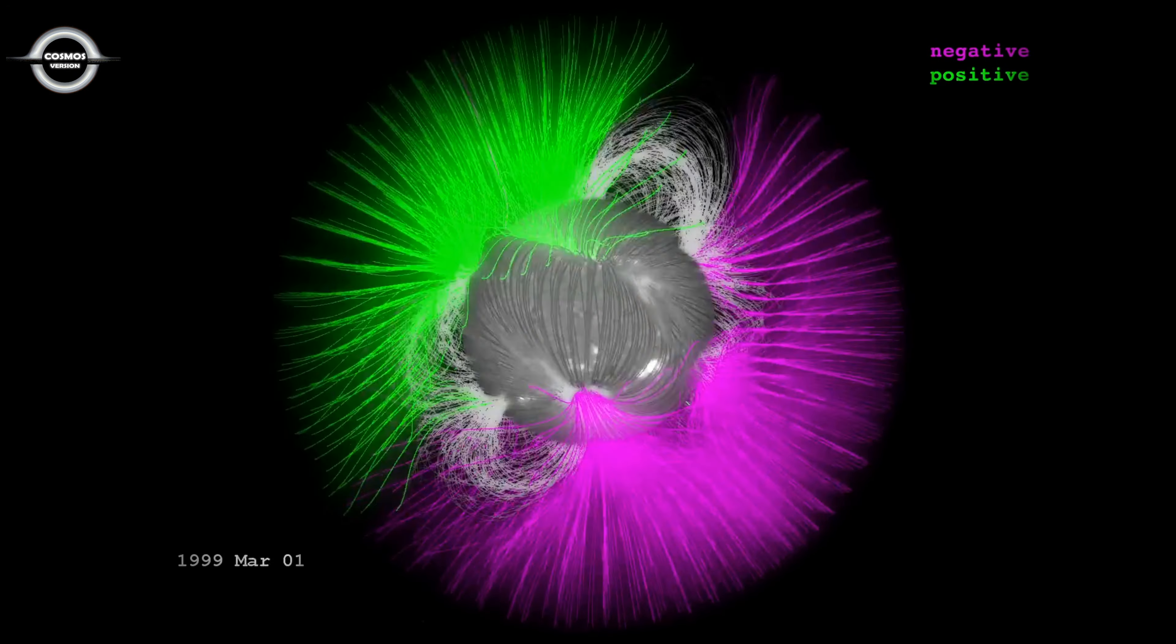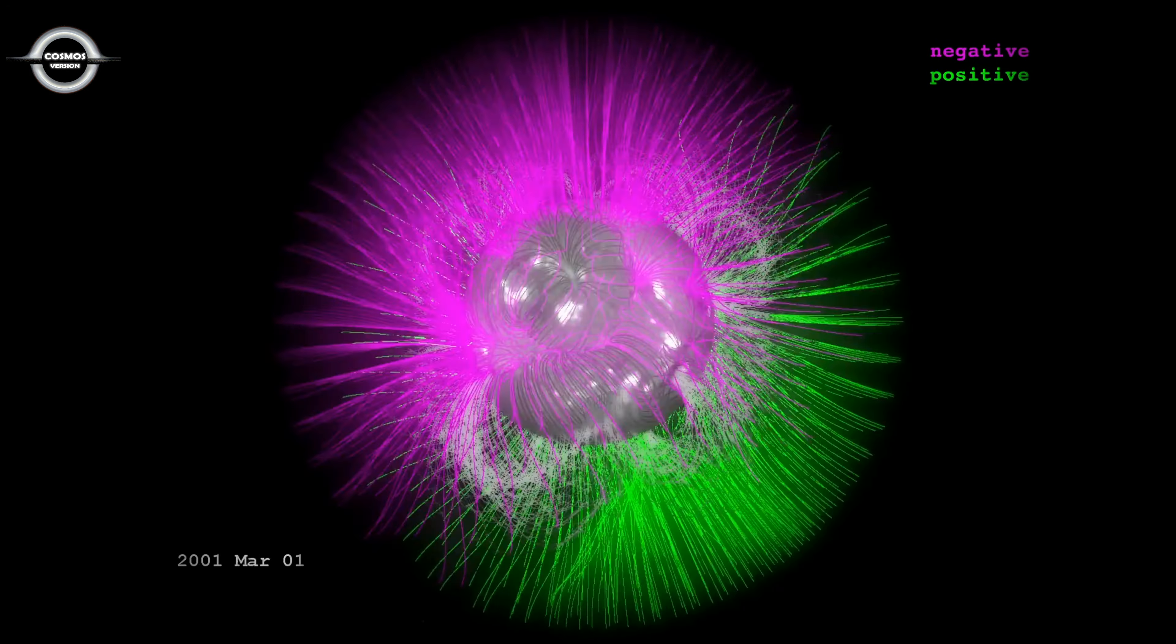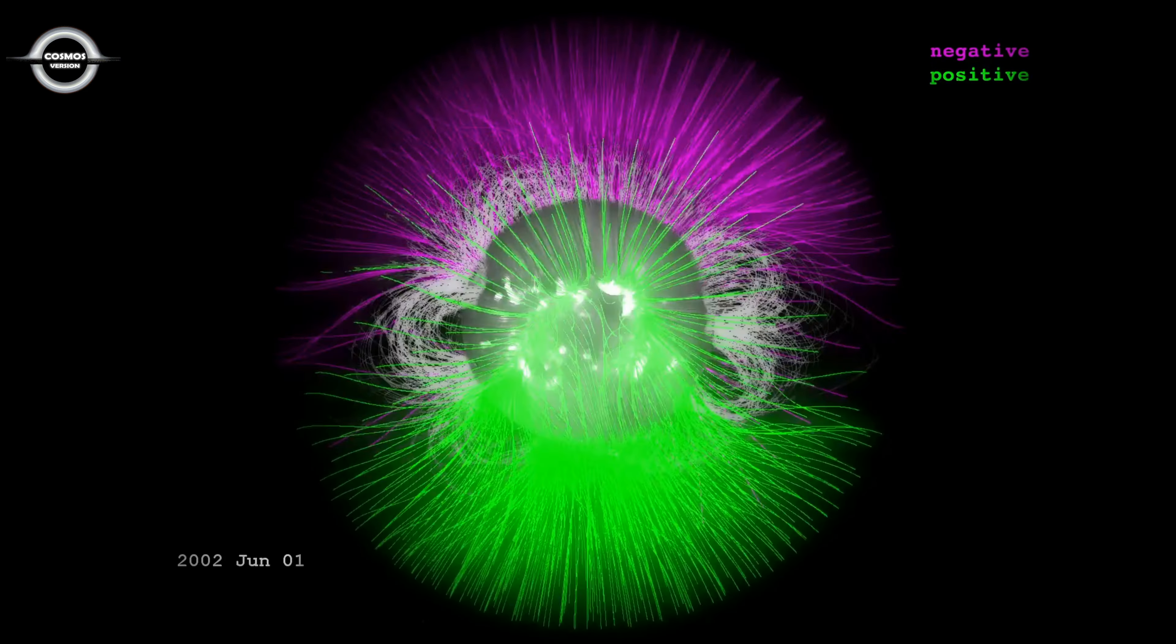The sun's magnetic field reverses polarity every 11 years. On longer time scales, even Earth's magnetic field flips.